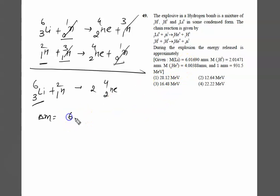That is 6.01690 plus mass of ¹H² that is also given to us, that is 2.01471. So that is left-hand side mass minus right-hand side mass. It is 2 times mass of the helium, that is 4.00388.